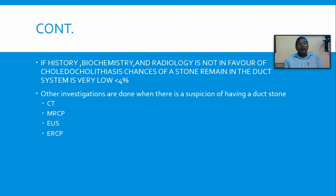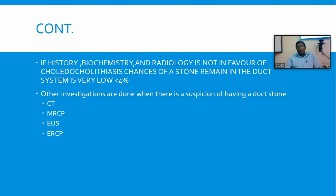If there is any evidence of abnormal findings in the biochemistry, radiology, or history — including evidence of pancreatitis — we prefer to do further investigations like CT scan, MRCP, endoscopic ultrasound, or ERCP. ERCP is an invasive investigation and its role has reduced considerably with the availability of CT, MRCP, and endoscopic ultrasound. These investigations are not done routinely but when there is specific suspicion of bile duct stone or obstruction. Mandatory routine investigations are ultrasound scan, liver function tests, full blood count, and CRP.